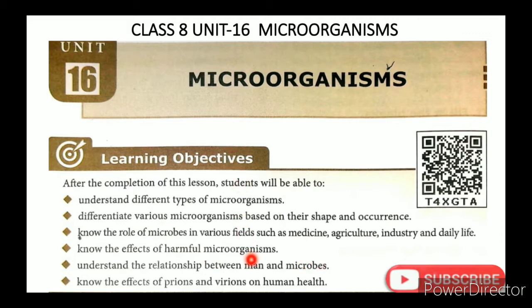இதெல்லாம் உள்ளுக்கு learning objectives ஆக கொடுத்திருக்காங்க. இதெல்லாம் microorganisms-ஓட different types நாமும் பாத்துவோம். இதெல்லாம் shape and occurrence வைச்சு நம்மை எப்படி differentiate பண்ணலாம் என்கிறதையும் பாத்துவோம். (These are the learning objectives given. We will look at the different types of microorganisms, and also how to differentiate them based on shape and occurrence.)